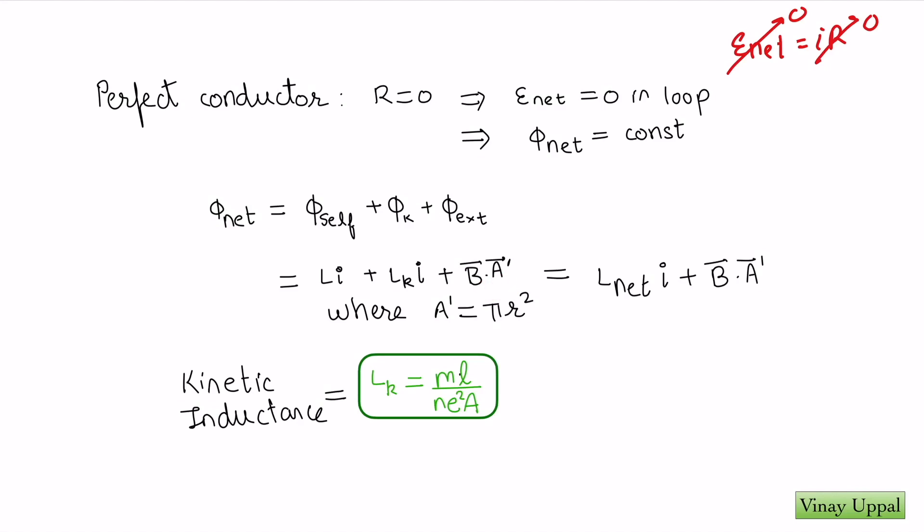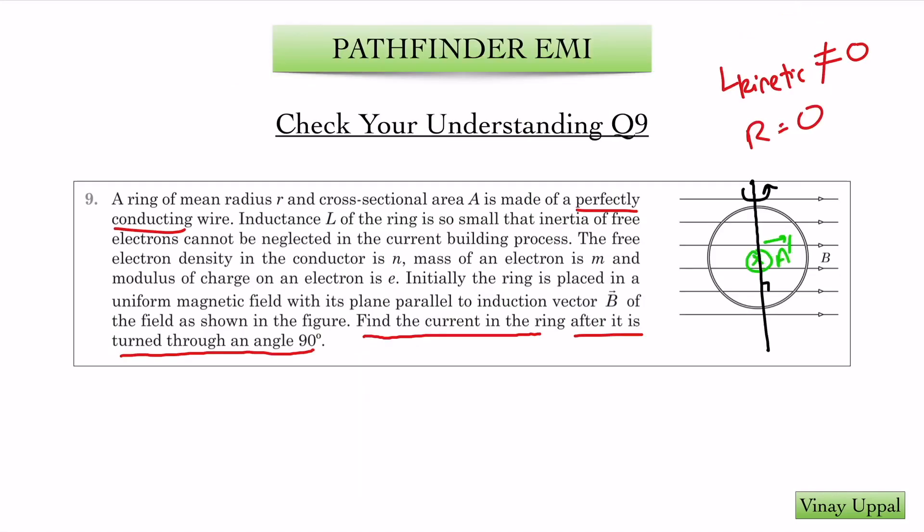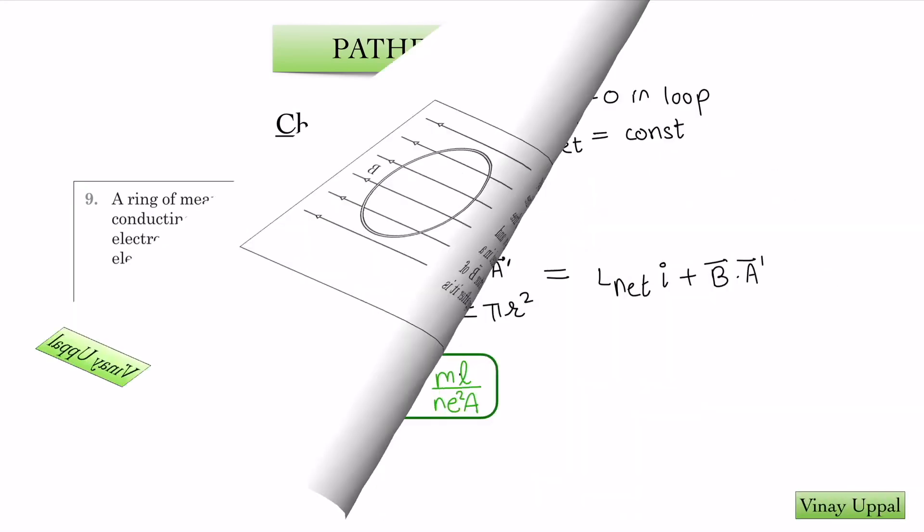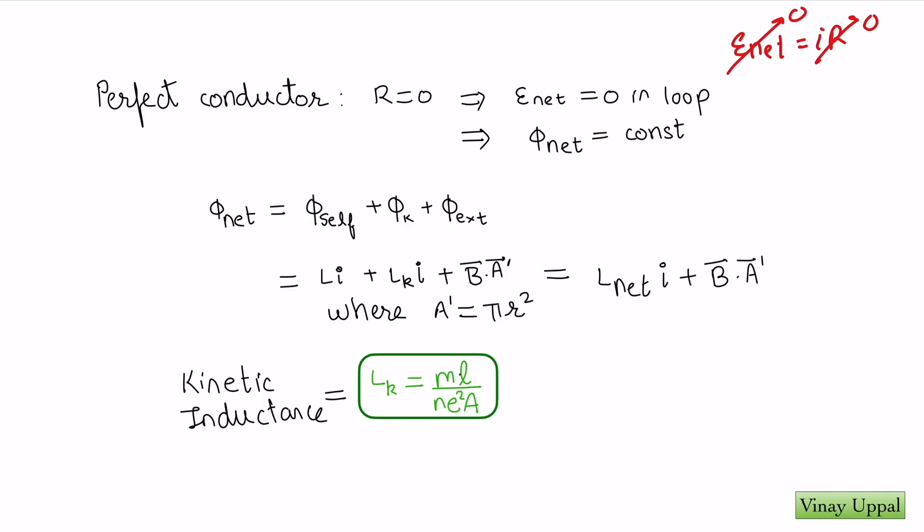I can write the net flux as self-flux due to the self-inductance plus the kinetic inductance flux plus any external magnetic field flux. Self-inductance flux would be L times I, kinetic inductance associated flux would be LK times I, and the external flux would be B dot A. Here A I am referring to as A dash because the question already uses A as the cross-sectional area. So L plus LK I am referring to as L net, the net inductance which includes the kinetic inductance.